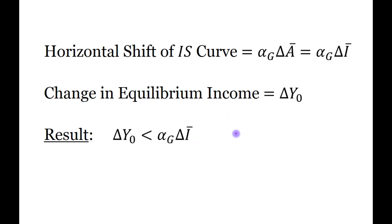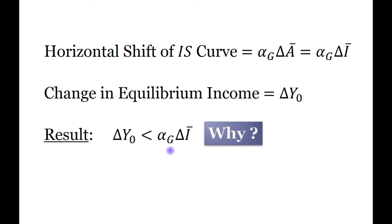The question is: why is the change in equilibrium income less than the horizontal shift of the IS curve? Let us understand this concept step by step.